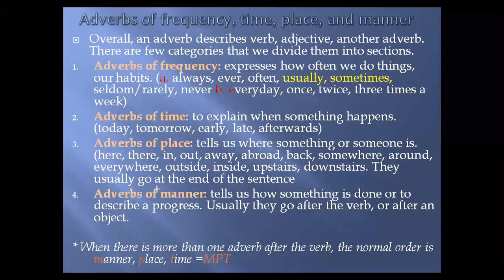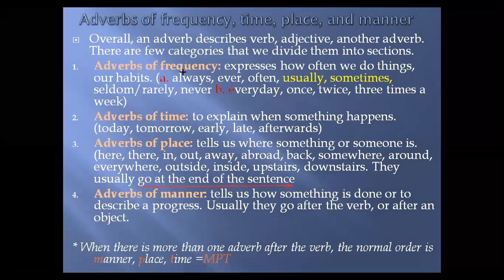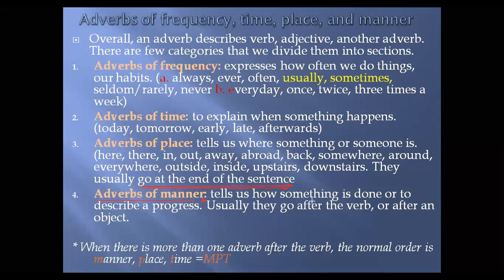Adverbs of place usually go at the end of the sentence. Frequency adverbs go between the subject and verb, while time adverbs go at the beginning or end. Now, adverbs of manner tell us how something is done — how something is done or how a process progresses. They usually go after the verb.